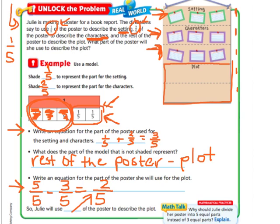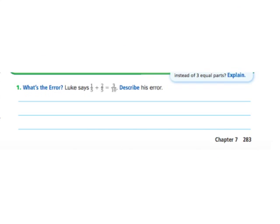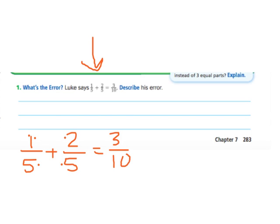Now, let's see. What if we have something like this? What's the error? Luke says one-fifth plus two-fifths equals three-tenths. So if I look at that, I can see what he did. I can see that he did one plus two equals three, and five plus five equals ten.